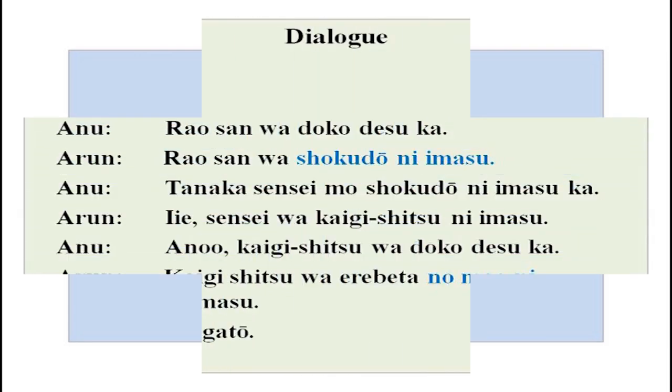We will do this small conversation. Rao san wa doko desu ka? Rao san wa shokudo ni imasu. Tanaka sensei mo shokudo ni imasu ka? Iie, sensei wa kaigi shitsu ni imasu. Ano kaigi shitsu wa doko desu ka? Kaigi shitsu wa erebeta no mae ni arimasu. Arigato. This is a conversation between Anu and Arun. Shokudo is the canteen or dining hall.